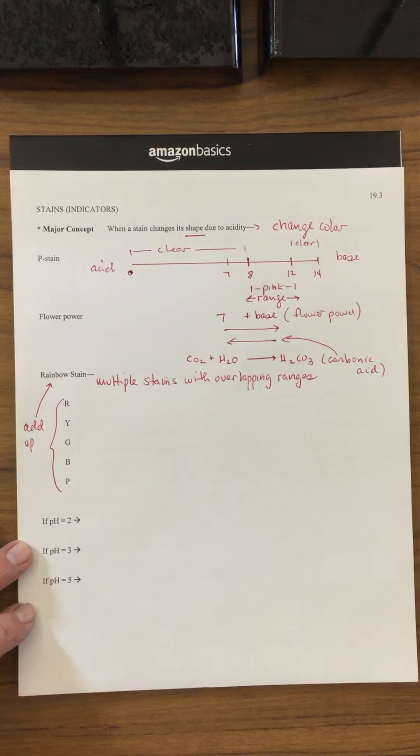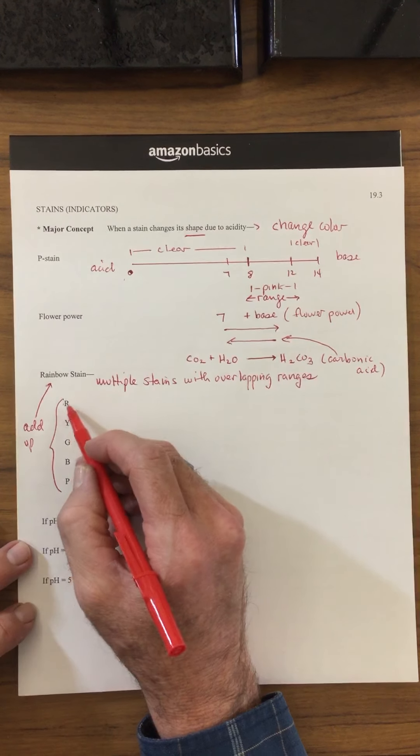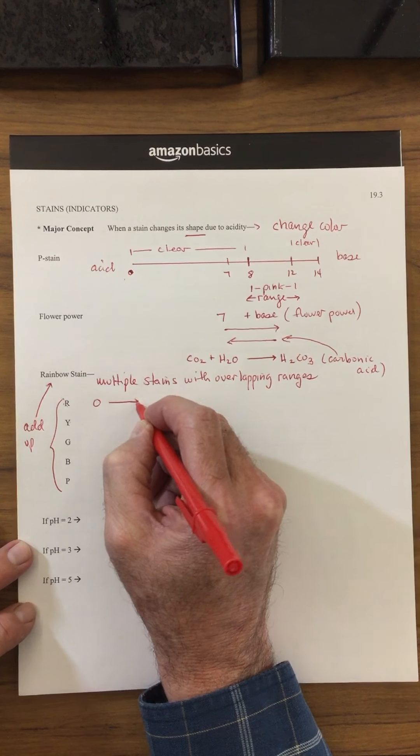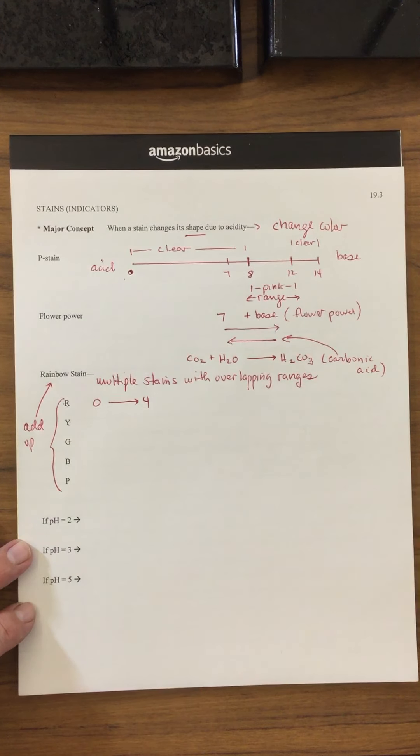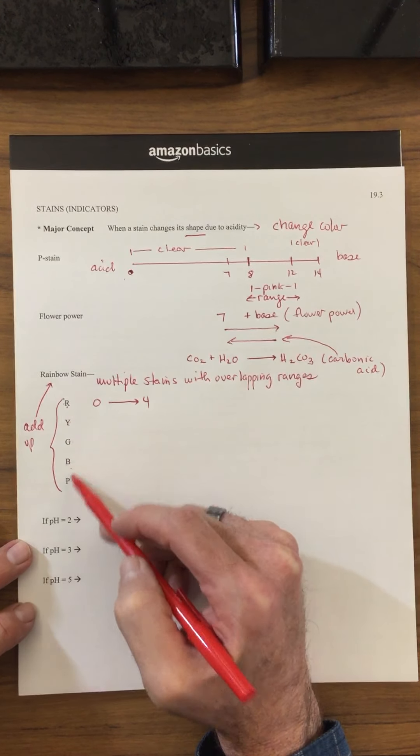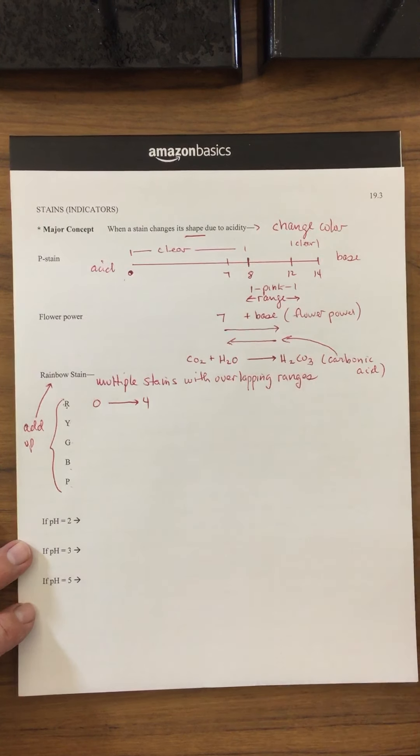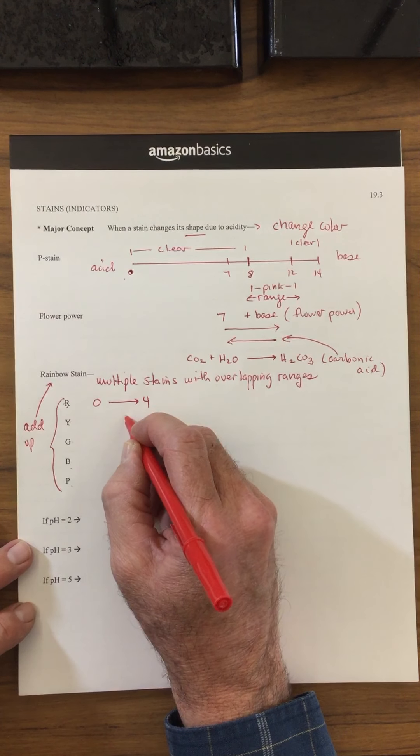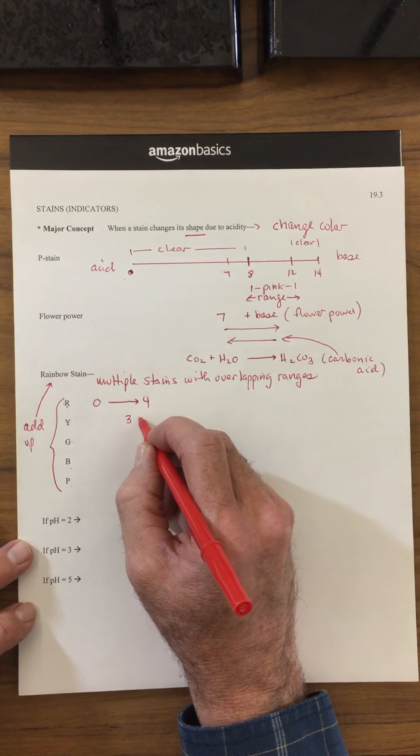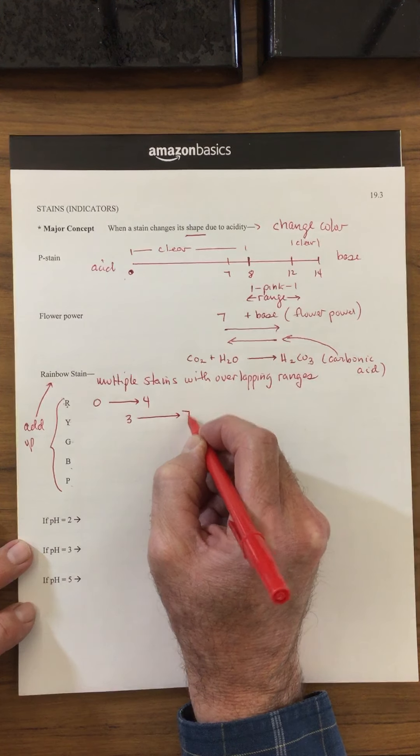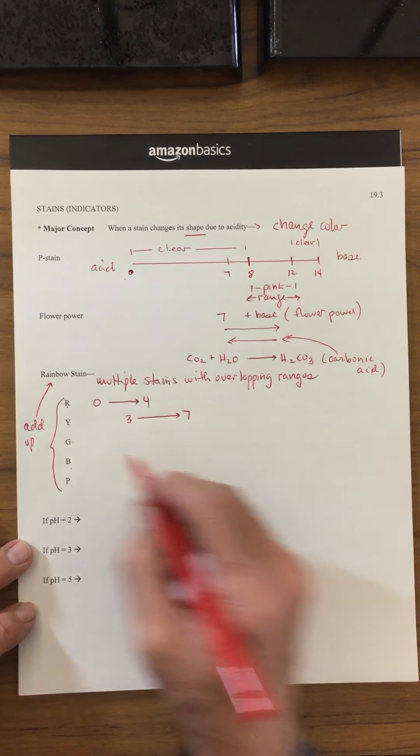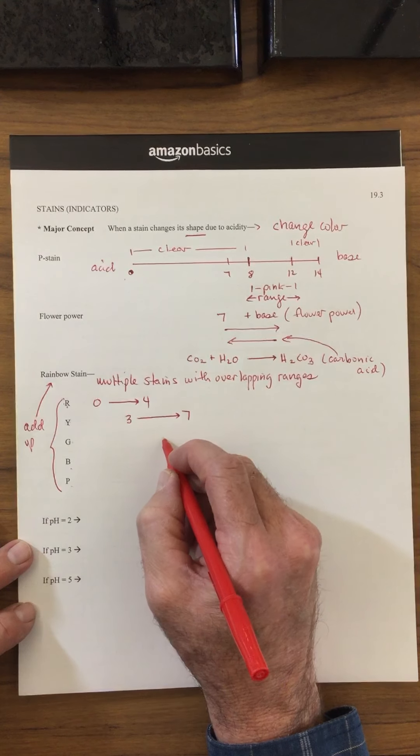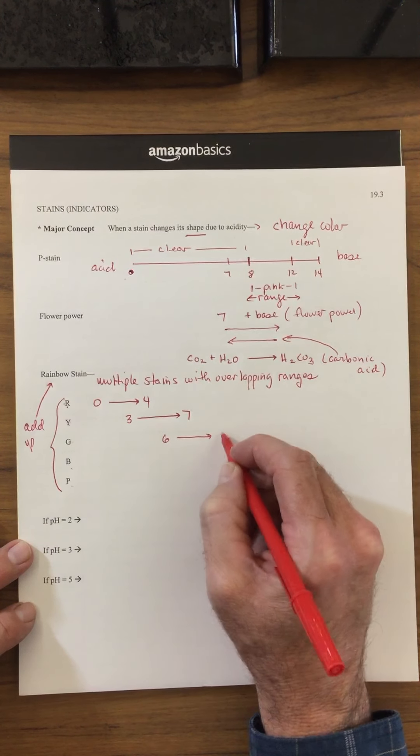Let's say my red stain functions between a pH of 0 and 4. Remember the rainbow stain has multiple stains—here's one, two, three, four, five different stains, but they have overlapping ranges. Let's say the yellow has its range between a pH of 3 and a pH of 7. Let's say the green stain functions in its range, like the phenolphthalein, between 6 and 8.